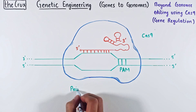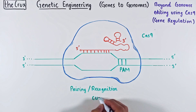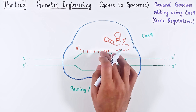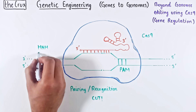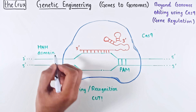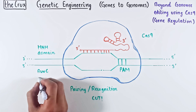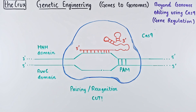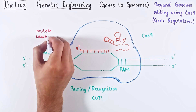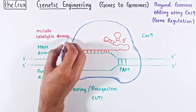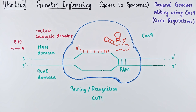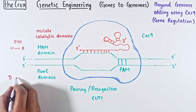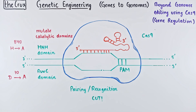In a normal scenario, the Cas9 enzyme pairs and recognizes the target DNA and makes a double-stranded cut. The cuts are made by the HNH and RuvC domains of the Cas9 enzyme. To go beyond genome editing, researchers have mutated these catalytic domains by introducing amino acid substitutions at the 10th and 840th amino acid position in the SpCas9.